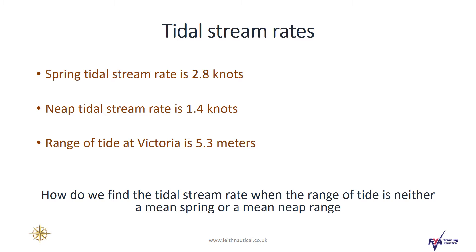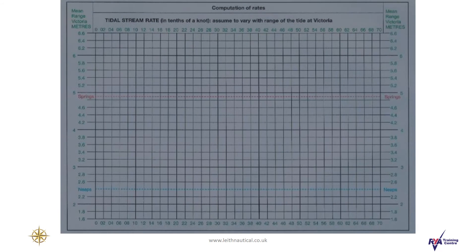So how do we find the tidal stream rate when the range of tide is neither a mean spring or a mean neap range? For this exercise we'll be using the computation of rates graph which you'll find on page 26 of the RYA training almanac.